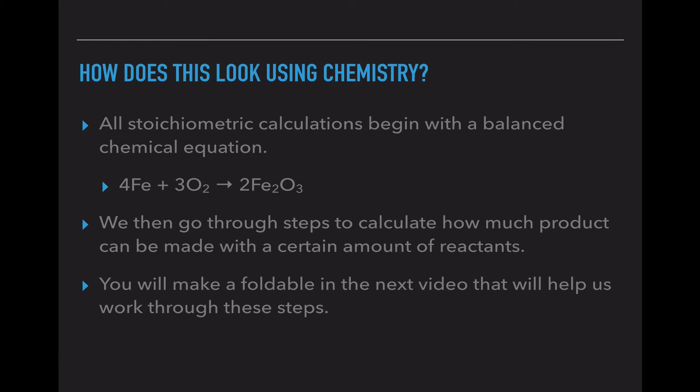So how does this look using chemistry? All stoichiometric calculations begin with a balanced chemical equation. So this one has four irons, three oxygen molecules, and creates two iron oxide molecules. We then go through steps to calculate how much product can be made with certain amounts of reactants. So I might tell you we have six moles of iron and unlimited oxygen. How much of our ending are we going to make? You will make a foldable in the next video that helps us work through these steps.